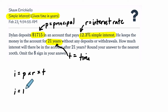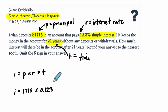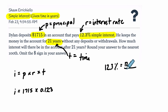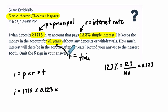You're starting off with the principal, which is $1,715. You're multiplying it by the R value, which is the interest rate. I like to put this as 0.123 — that's what I recommend to students. Take your percent: 12.3% literally means out of 100. So I take 12.3 and divide it by 100 to convert it to a decimal. That's the interest after one year. But in this problem I have 21 years, so I'm going to do this 21 times. Then it's just a matter of calculating these three things.